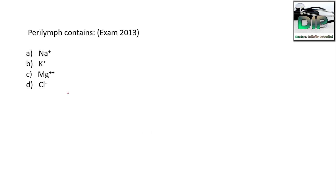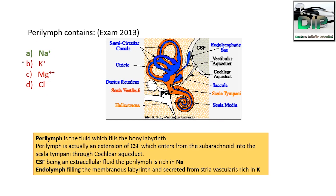The question is: perilymph contains — Option A: Sodium, Option B: Potassium, Option C: Magnesium, Option D: Chloride. The correct answer is Sodium.